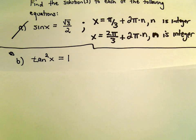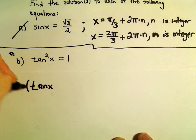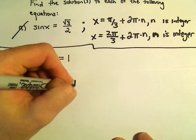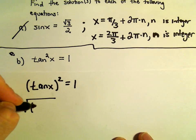And the way that I'm going to do this, this is tangent of x quantity squared equals 1. Well, if something's being squared, to get rid of the square, we can just take the square root of both sides.